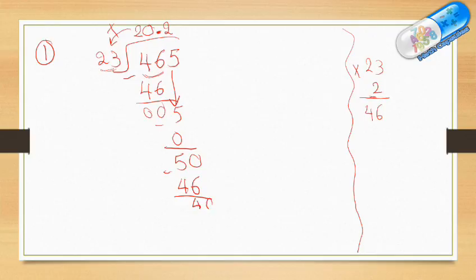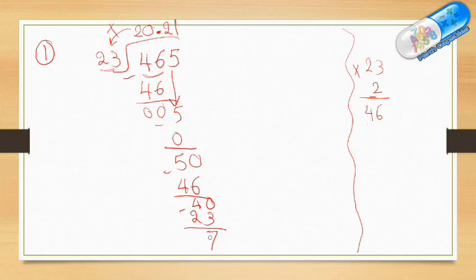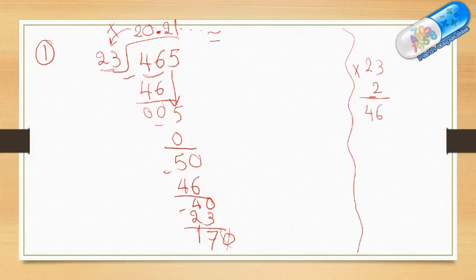Now add another 0: 40 divided by 23. I won't take 23 times 2 because that's 46, which is more than 40, so I take only 1. 1 times 23 is 23, and subtracting gives 17. If you want to continue, add a 0 and so on. If not, stop here and round to the nearest tenth — the tenth digit is 2, so the answer rounds to 20.2. If you don't know how to round, please watch the video on rounding decimals.